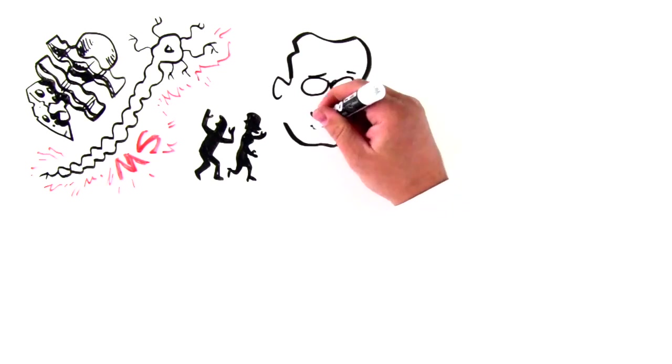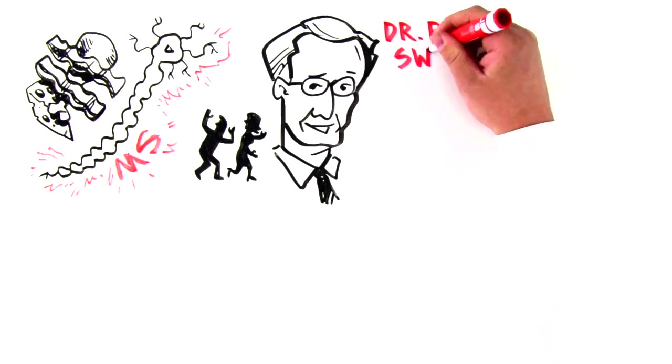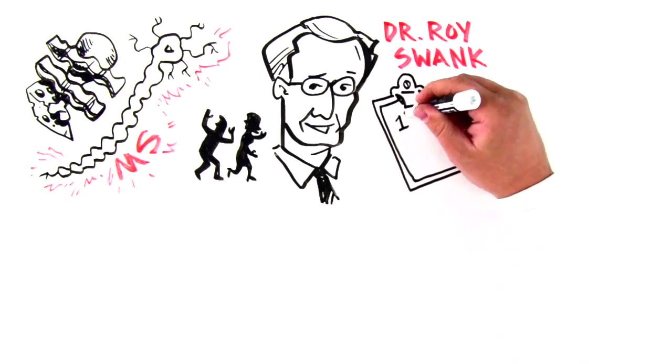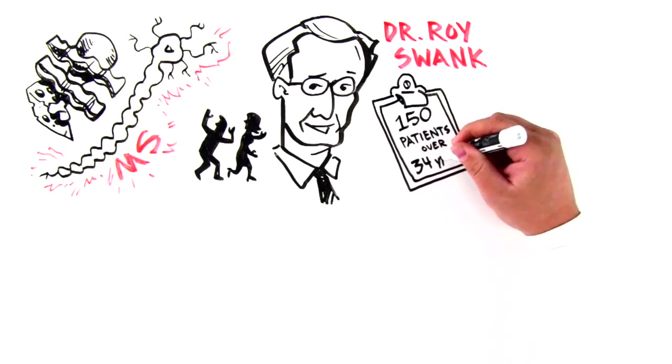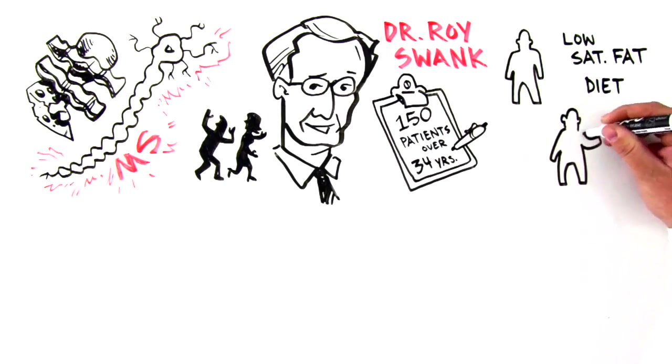The most prominent person to study the connection between saturated fats and MS was Dr. Roy Swank. Starting in 1949, he tracked 150 patients with MS over 34 years. Half stuck to a diet low in saturated fat, the other half didn't.